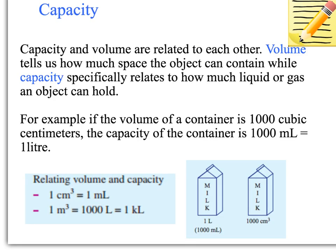Capacity and volume are related to each other, so you may need to find the volume of something before you can find the capacity. Volume tells us how much space the object can hold or can contain, while capacity specifically relates to how much liquid or gas that is. You might have a container that can hold 1,000 cubic centimetres — that's the volume. When you're trying to find the capacity, so how much liquid or gas it will contain,